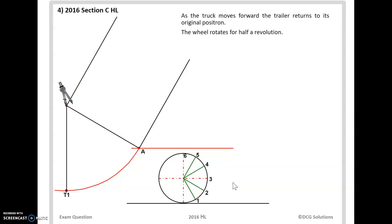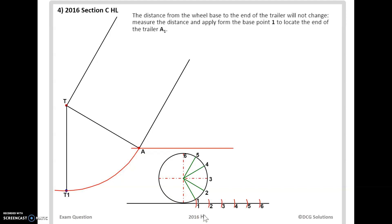All right so the wheel rotates for half a revolution. So we've divided up here into six positions and we can plot them out on the line. Now the distance between the ground and A is always going to be the same. So the distance from the wheelbase to the end of the trailer will not change. Measure the distance and apply from the base point one to locate the end of the trailer A1. So the bottom there to A and then we're going to use that distance to mark it off for A1.